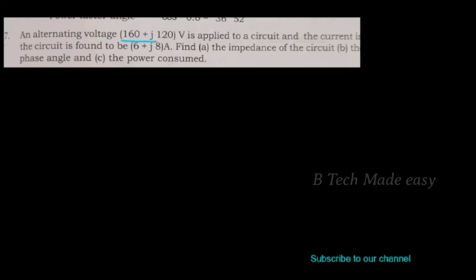Next question: an alternating voltage of 160 plus j120 volt is applied to a circuit and the current in the circuit is found to be 6 plus j8 Ampere. Find the impedance of the circuit, the phase angle, and the power consumed.